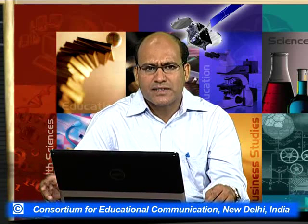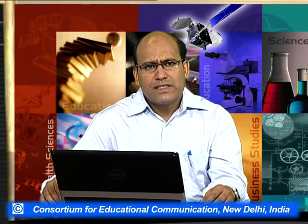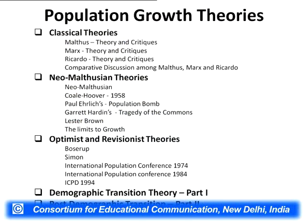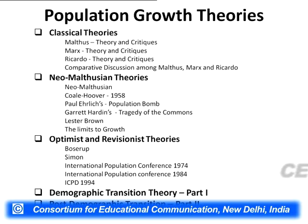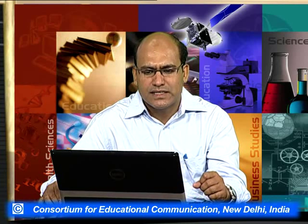Malthus was the first person who gave the population theory. Though his theory was criticized a lot, he was one of the pioneer persons who showed concern about rapid population growth. After him came his contemporary Ricardo, later Marx, and then neo-Malthusian scholars. If we try to make typologies of all the population theories today, we can make four or five different typologies. The first typology could be classical theories, where Malthus, Marx, and Ricardo are the proponents.